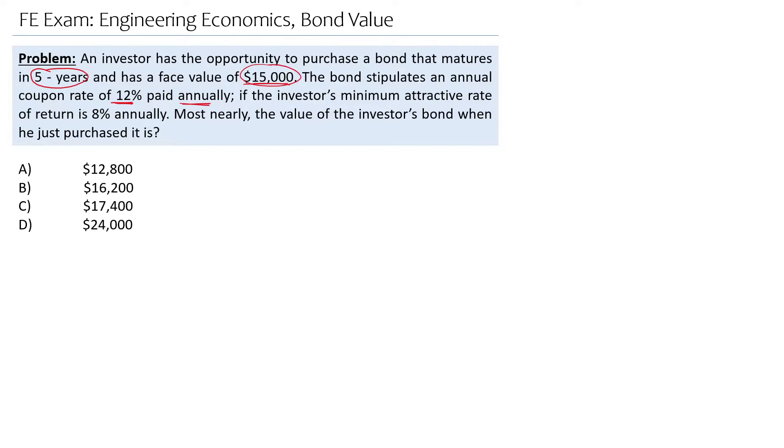If you draw the cash flow diagram, we are receiving a periodic payment for five years, which is 12% multiplied by $15,000, and at the end you will also receive $15,000.